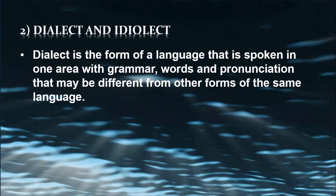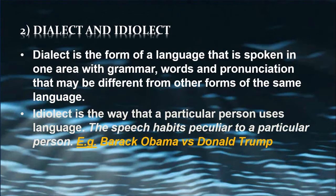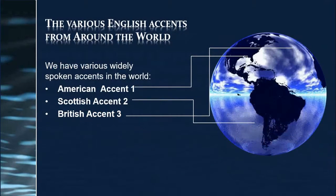Next, dialect and idiolect. Dialect is a form of a language spoken in one area with grammar, vocabulary, and pronunciation that may be different from other forms of the same language. English has many dialects, even within England. In Ethiopia, for example, Amharic has over ten dialects. Idiolect is the way a particular person uses language — speech habits peculiar to an individual. For instance, the way Barack Obama and Donald Trump speak English is different, even though they are both from America — that is idiolect.